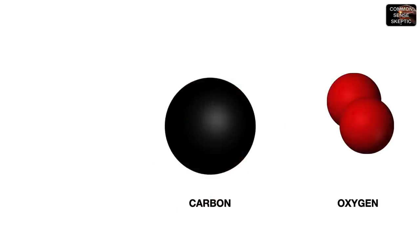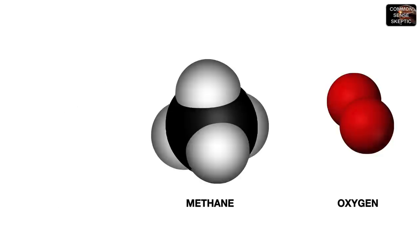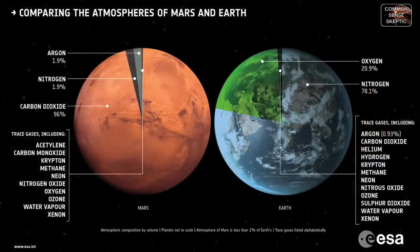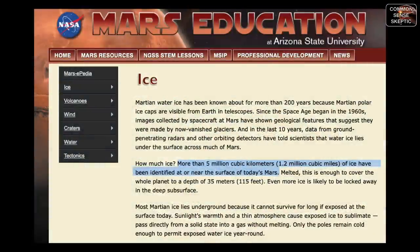Splitting those carbon dioxide molecules gives us carbon atoms and twice as many oxygen atoms. To create methane from this, the two oxygen atoms per carbon atom need to be replaced by four hydrogen atoms — and there is virtually no hydrogen in the Martian atmosphere. So where is that hydrogen going to come from?